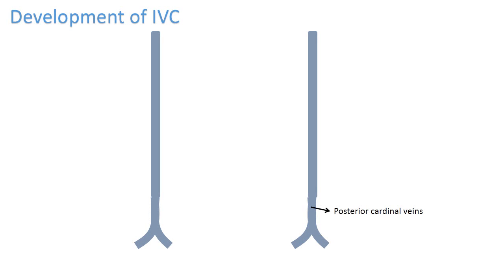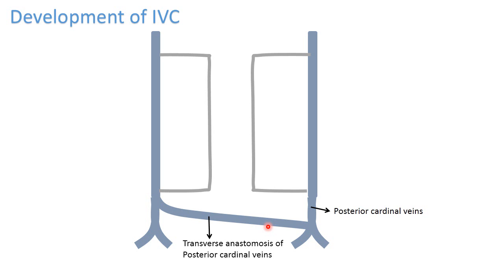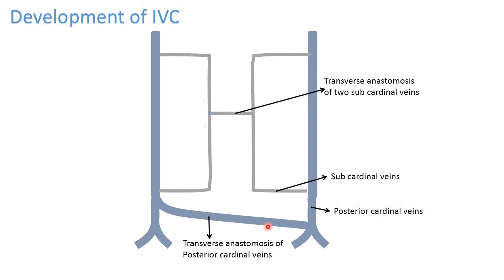The two posterior cardinal veins communicate with each other via a transverse anastomotic channel. There will be two more developing veins called sub-cardinal veins, which develop in relation to the developing mesonephros. These sub-cardinal veins will communicate with each other via transverse anastomosis.